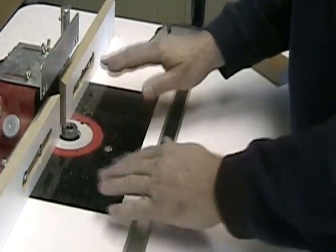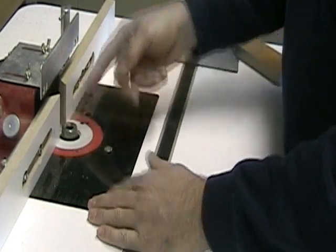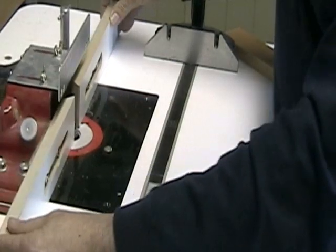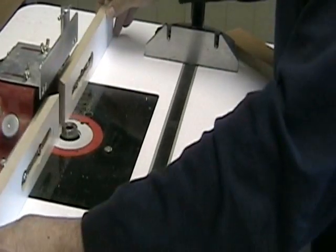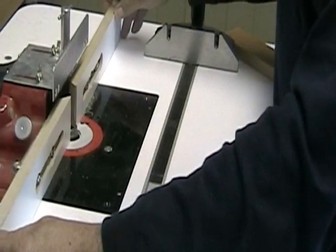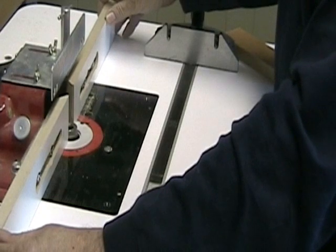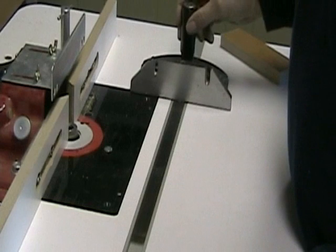The router, of course, is underneath this plate. In a moment, we're going to be installing the router bit. Now everything on the router table is centered to the bit. So this fence, even though it moves around, is always centered to wherever the bit is. Now the reason that that's important is because of this slot.